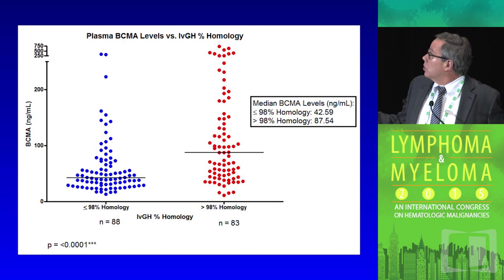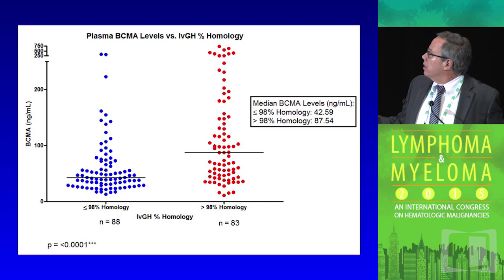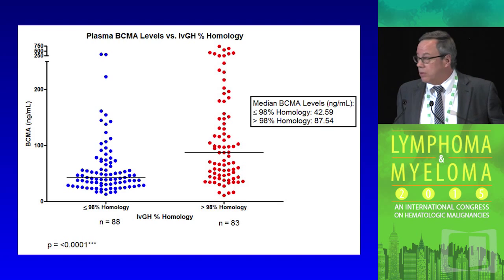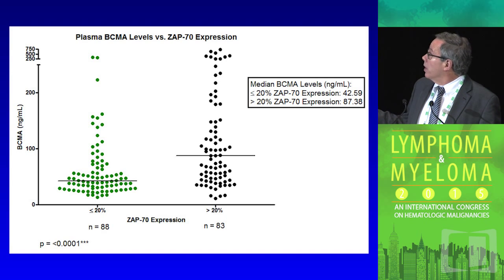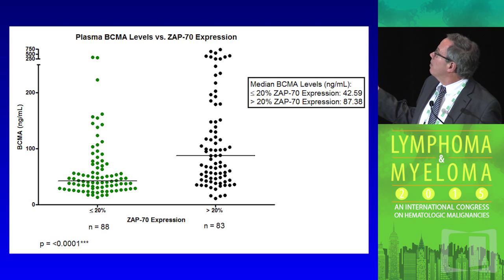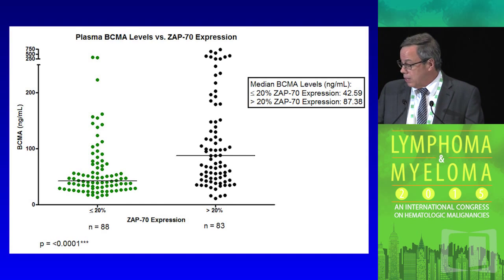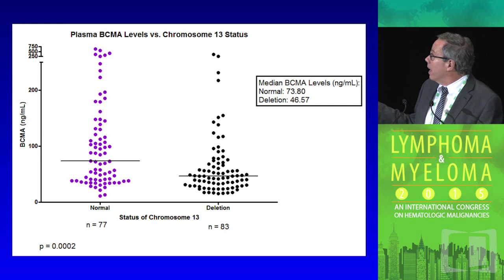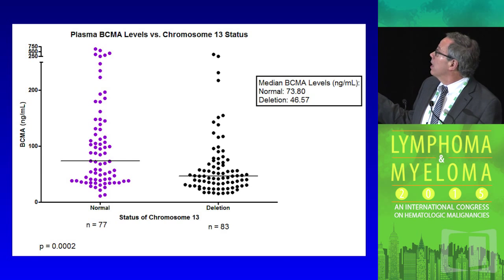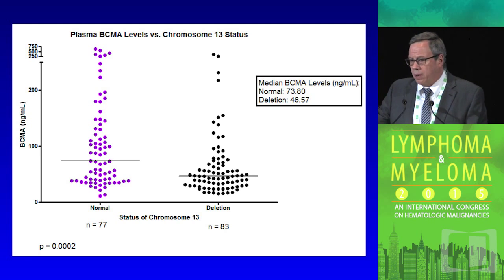BCMA also correlates with known prognostic factors in CLL. Patients with IGHV homology greater than 98% (poor-risk) have a median BCMA of 88, versus 42 for those with less than 98%. Similarly, ZAP-70 greater than 20% has a median of 87 versus 42 for those below 20%. For chromosome 13 deletion — a good prognostic factor in CLL unlike myeloma — those with the deletion have lower BCMA than those with normal chromosome 13 status. Chromosome 17 (p53) trended similarly but did not reach statistical significance (p~0.08).